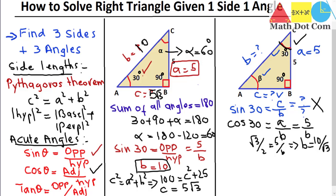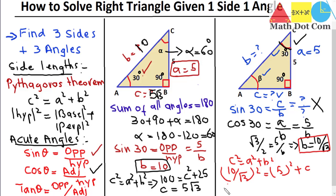Now we find side c using the Pythagorean theorem. We know hypotenuse b = 10/√3, so: (10/√3)² = 5² + c², which gives c = 5/√3. We now have all three sides. For angle beta, we add all angles: 90 + 30 + beta = 180, so beta = 60 degrees. All three sides and angles of this right triangle are now found.